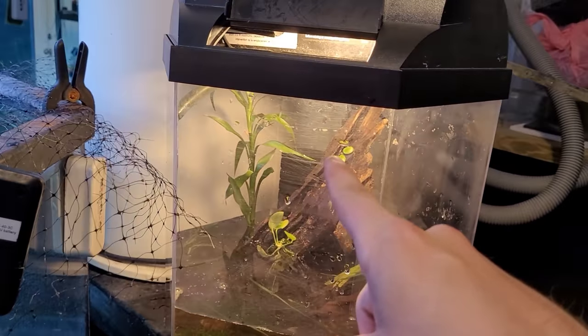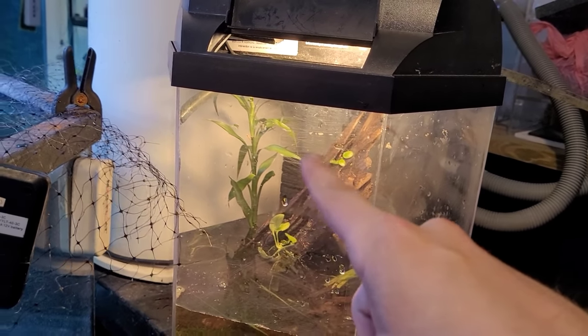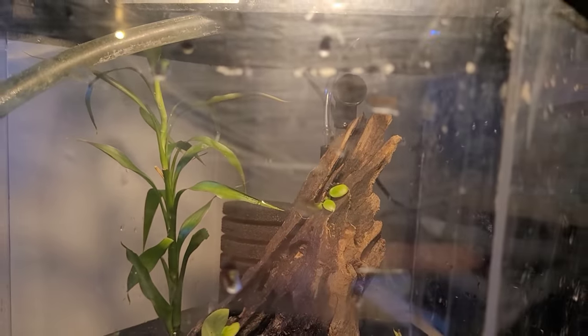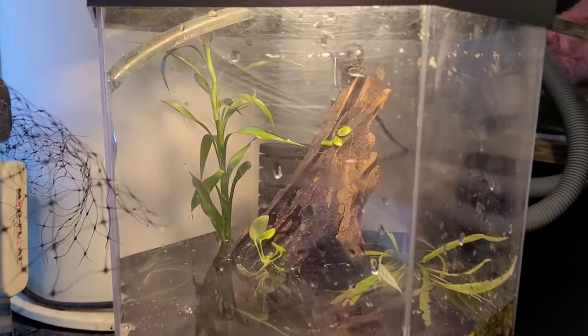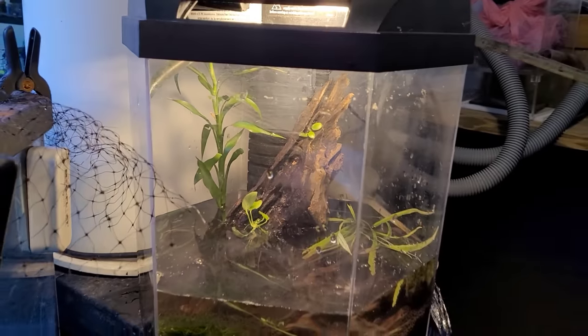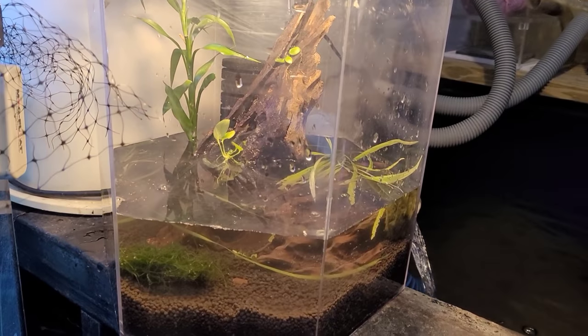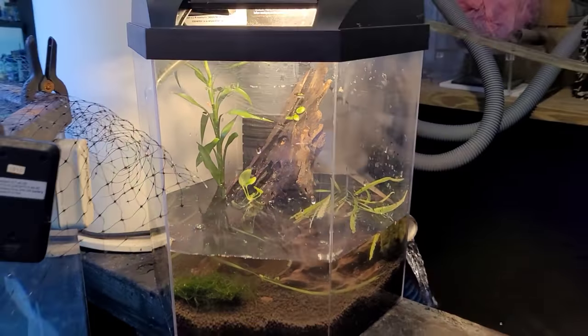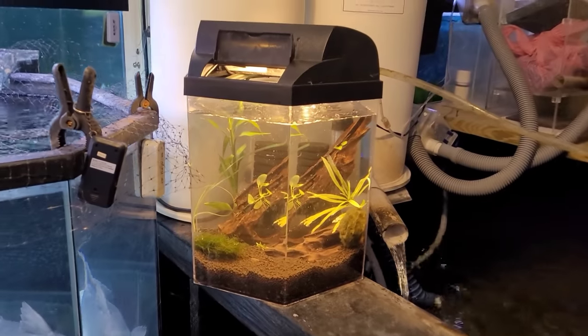I went ahead and took a single sponge filter. I took the sponge off of a seated one and put the new one on our old double barrel sponge filter so we can start seeding the new one. This one's already pre-seeded, so once it's filled it can just be ready for fish. Tomorrow she'll get her pea puffers.